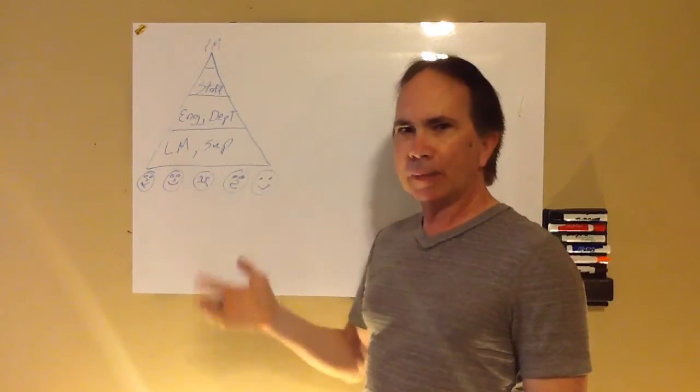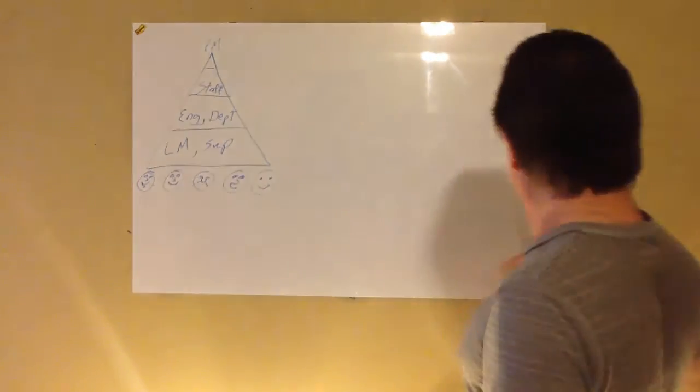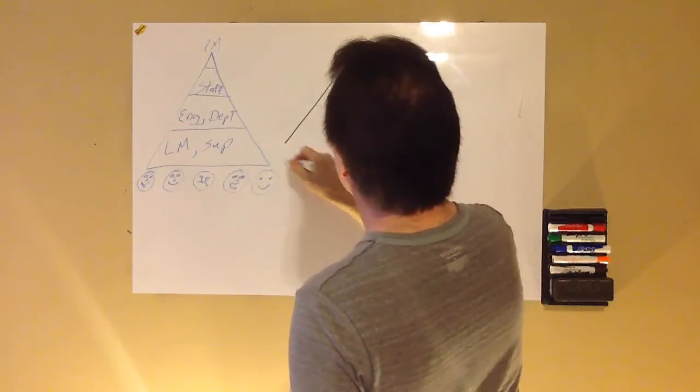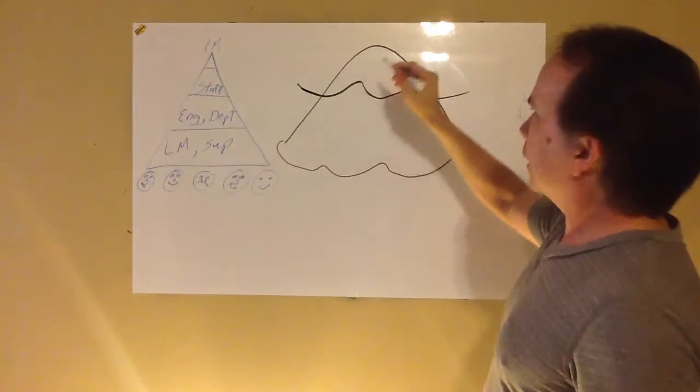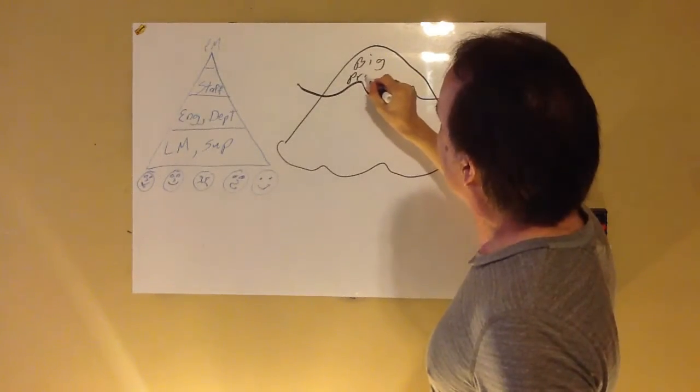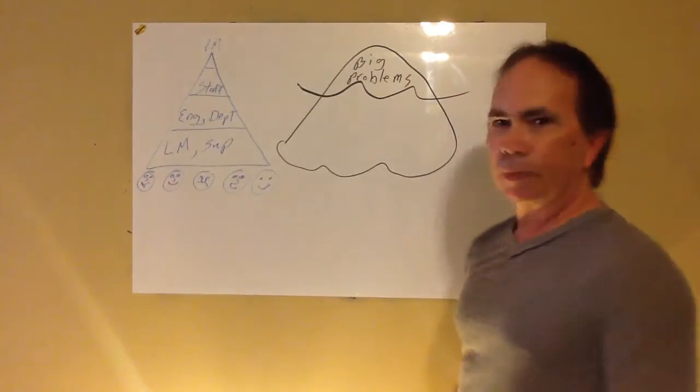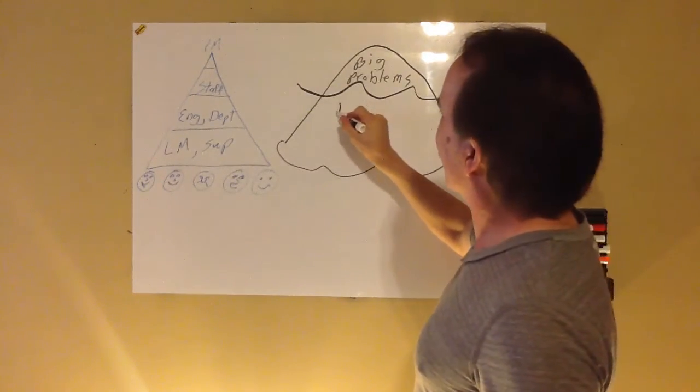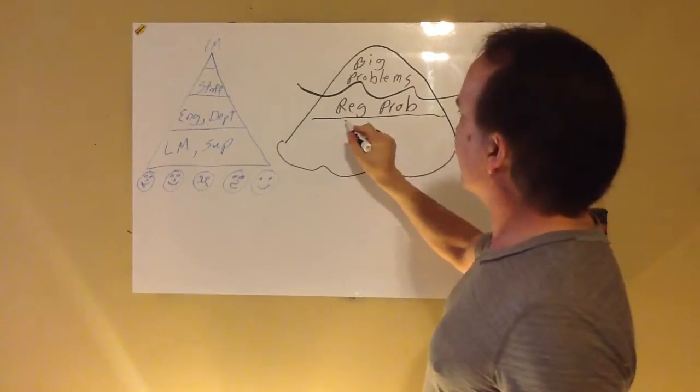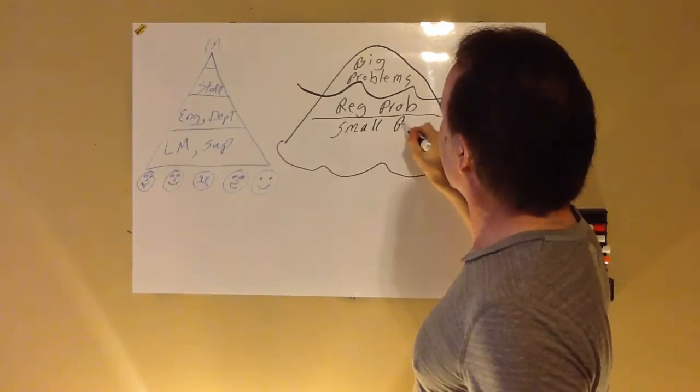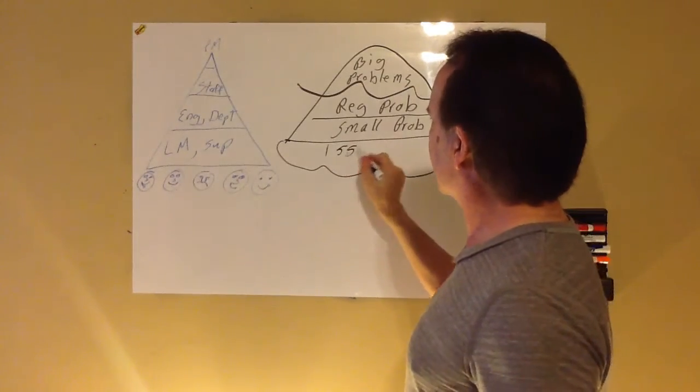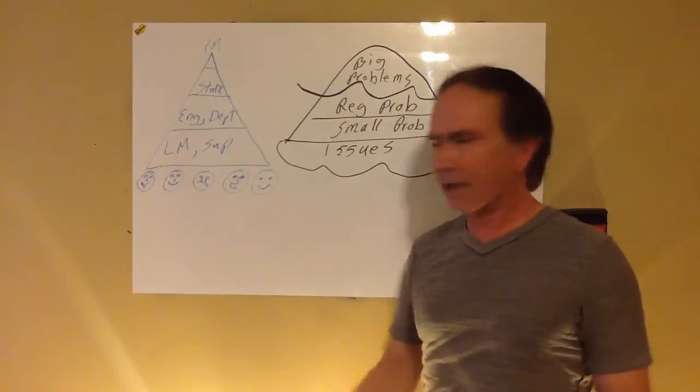If these are the people that see the problems, we want them empowered to drive the change. You've all heard of the iceberg principle. So let's do a quick iceberg here. We've got our big iceberg poking out of the water. Up top we have big problems. If the problem is sticking out of the water, it's a pretty big one. Everyone sees it. Below the surface, we have regular size problems. And below that, we have some small problems. And below that, we've got a whole bunch of issues.